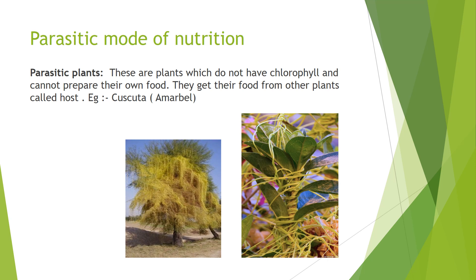There are some other modes of nutrition under heterotrophic mode of nutrition: parasitic mode of nutrition, saprotrophic mode of nutrition and symbiotic mode of nutrition. In parasitic mode of nutrition, parasites are plants which live on other plants. They do not have chlorophyll, they live on other plants and take the food prepared by those plants. The plant on which they live is called the host plant. Parasites derive their nutrition from the host plant, so they cause harm to the host plant — the host plant may die because all the nutrition is absorbed by the parasite.